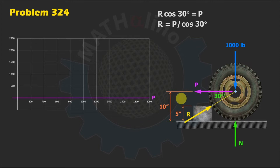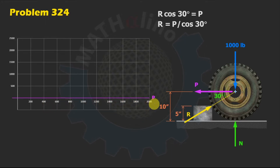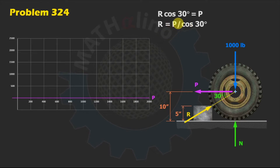To have a deeper insight into this problem, let us plot the graph of the reaction R as we increase the value of P. We start with P equal to zero, then gradually increase P to 100, 400, until we reach 2,000 pounds. Since the R equation is linear in P, we have a straight-line graph.